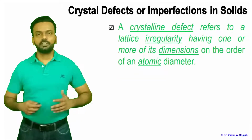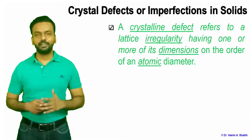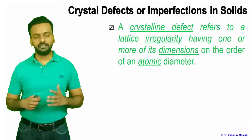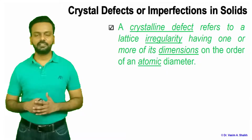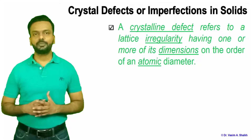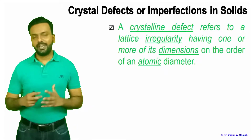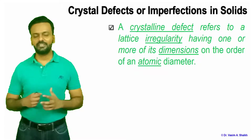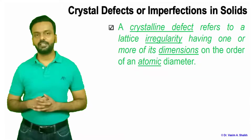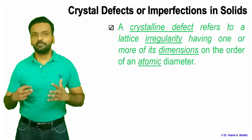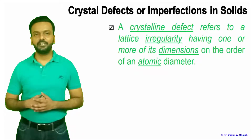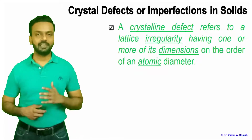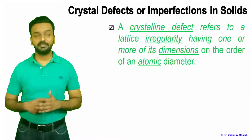A crystal defect refers to a lattice irregularity. The material has a crystal structure — as we have seen earlier, like BCC and FCC — which seems to be perfect, but in actuality it is not the case. There are things which are missing, or some foreign bodies which are present in the material, mainly at an atomic diameter or atomic level. Their dimensions are at an atomic level, and only then we call them a crystal defect.